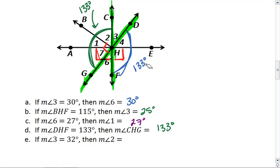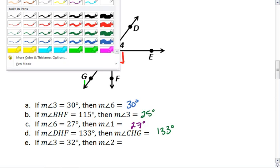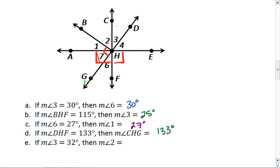Okay, last problem. If the measure of angle 3 is 32 degrees, I want to find the measure of angle 2.